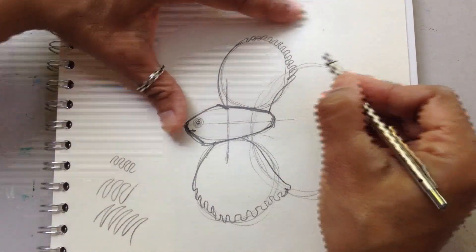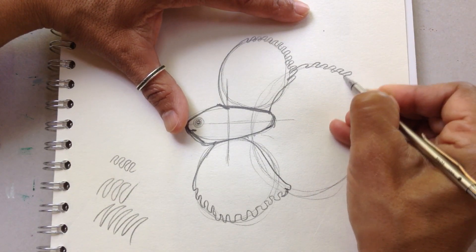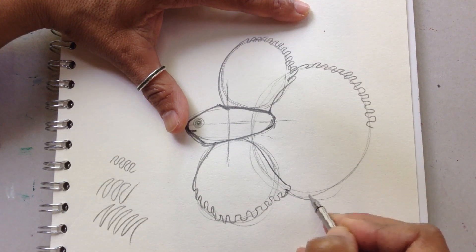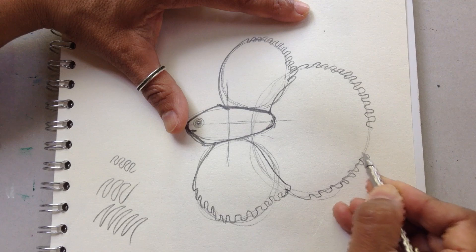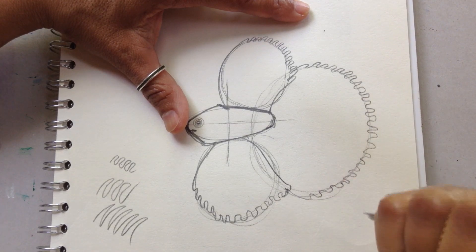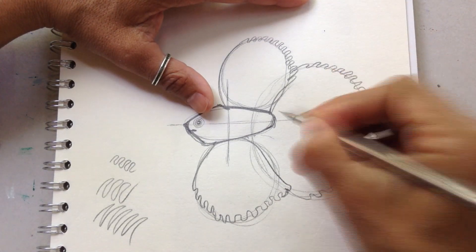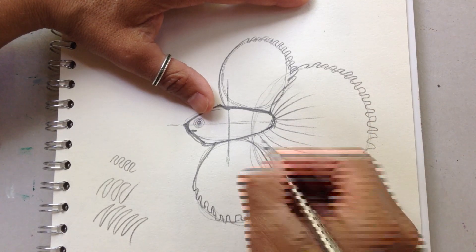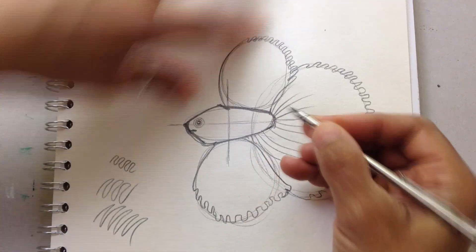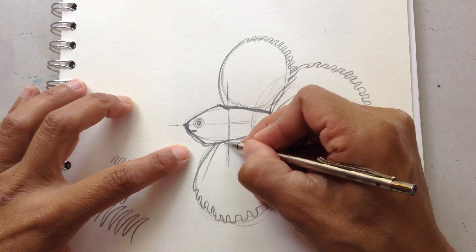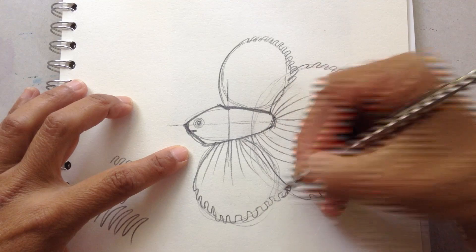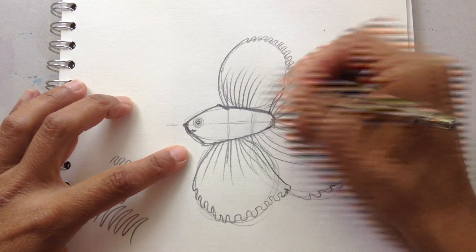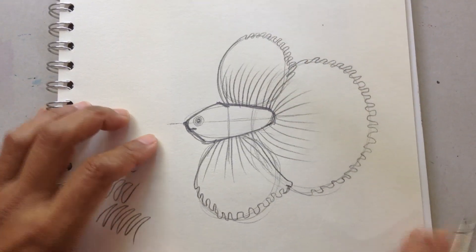Now for the tail I'm going to use the whole area of my circle that I did before as a guide. Now I'm going to make these stripes. They have these kind of stripes with different colors. And here they go like this.